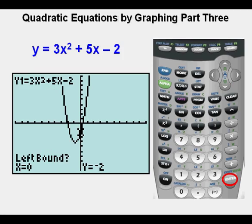He sees the cursor blinking here on the y-axis and the left bound question mark. Since he's evaluating the point or solutions here to the right of the y-axis, the cursor is to the left of that point he's evaluating. So that's where the red arrow is pointing. Press enter.